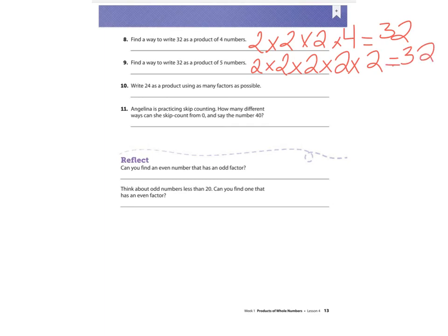Number 10: write 24 as a product using as many factors as possible. So 24 is our answer. Two times two is four, times two again is eight, and eight times three is 24.